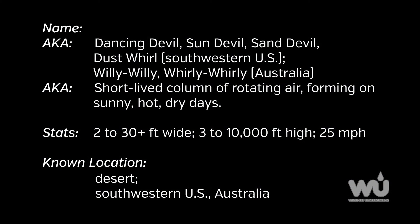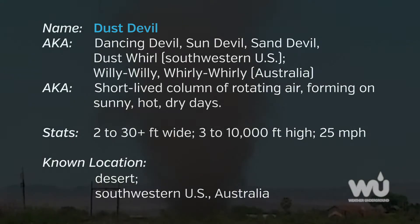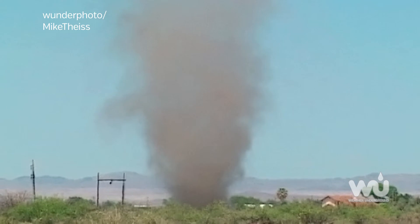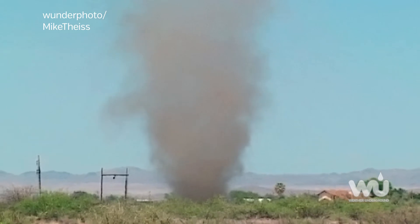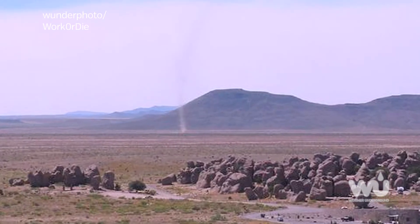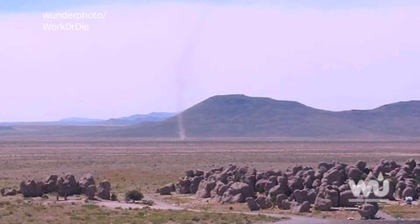Dust devils are short-lived columns of rotating air that form on sunny, hot, dry days over the deserts. These harmless eddies range in size up to 3,000 meters tall, forming as a swirling updraft in sunny conditions during fair weather, greatly differing from the conditions necessary for tornado development.